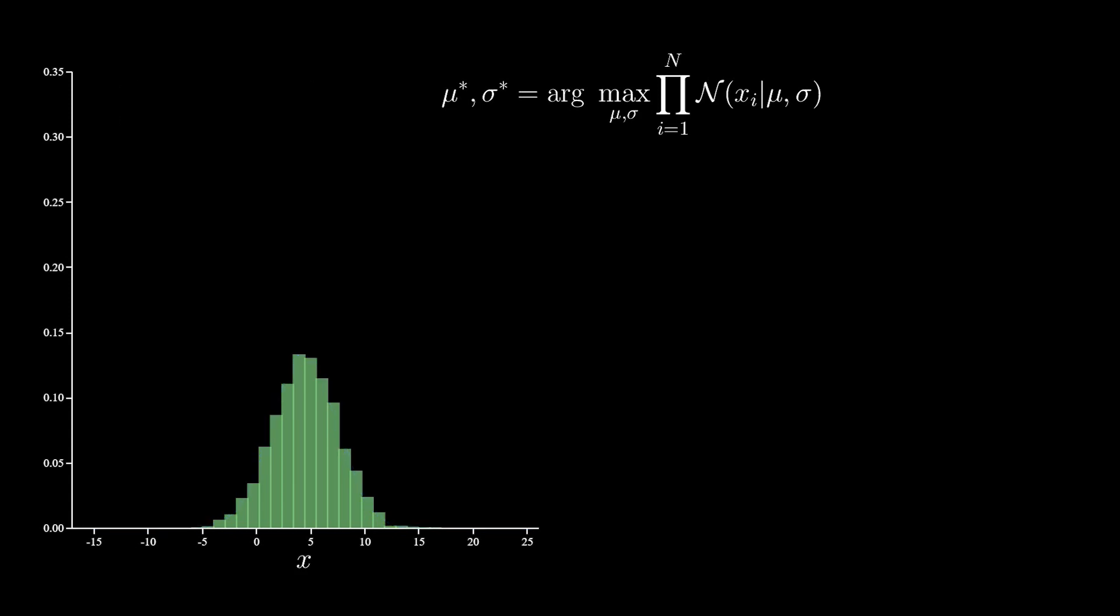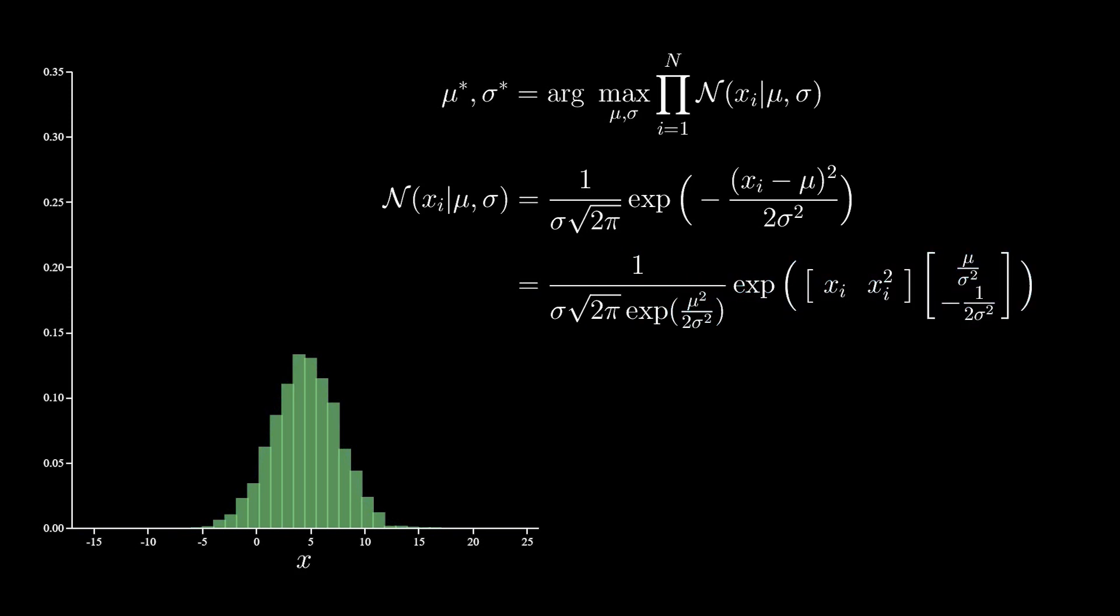We're going to do the exact same thing, but first we'll rewrite the likelihood function of the normal like this. Let me explain. What we're doing here is separating expressions involving only parameters from expressions involving only observed values of x. Specifically, all parameters that aren't multiplied with observed x values are moved out of the exponent into this denominator. For what remains in the exponent, we structure it as a dot product of two vectors. One vector of the dot product depends only on the x values. Notice, there are no parameters. The other vector depends only on the parameters.